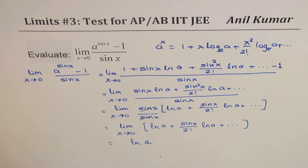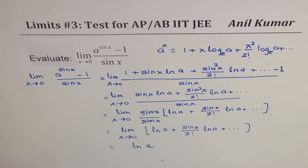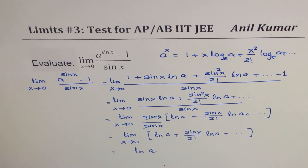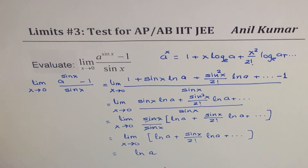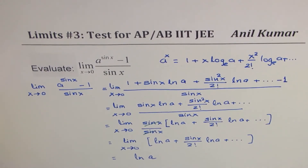That is how you evaluate it using series — this is probably the simplest way to find the limit of such functions. Now we will take another example to show how to write cosine x and e to the power of x and find the limit for those functions.